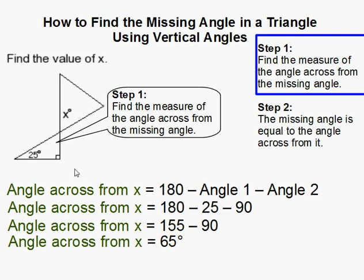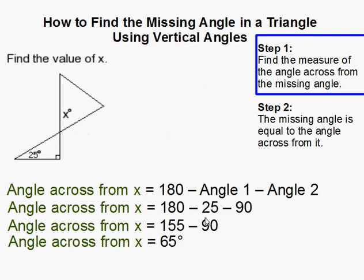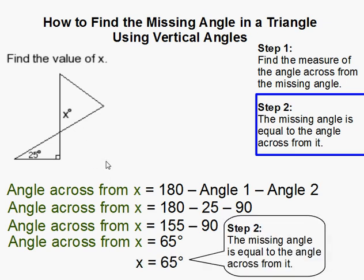So that means this angle right here is 65 degrees. Now the missing angle across from it is the exact same thing, because like I said before, vertical angles are equal in measure. And that completes our problem.